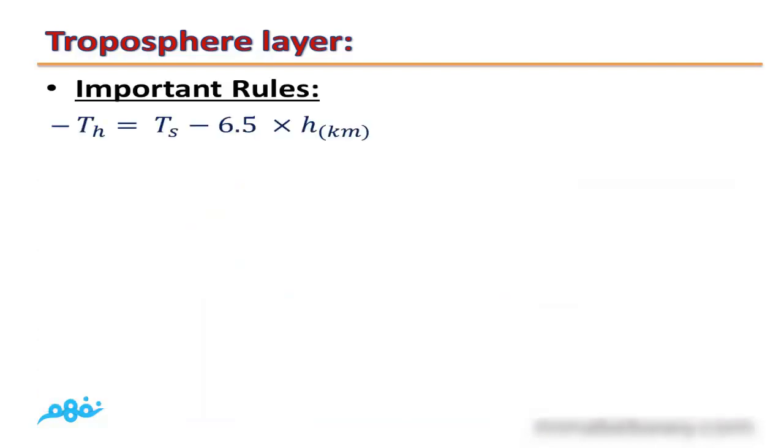Important rules: To calculate the temperature at a certain height, for example on the top of a mountain, we have to know the temperature at sea level or at its bottom, minus 6.5 times the height of mountain in kilometers.